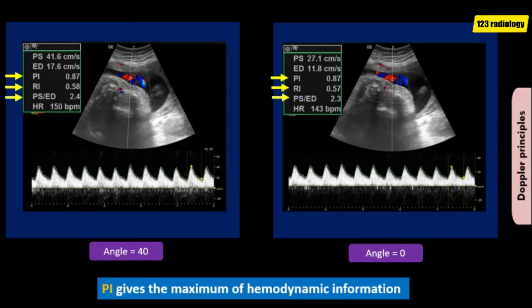Look at these two waveforms. They were obtained from the same fetus from the umbilical artery but with different angles between the ultrasound beam and the direction of blood flow. The peak systolic velocity of the right waveform is about 41 cm/s with an angle of about 40 degrees, while on the left waveform it is about 27 cm/s with an angle of 0 degrees. However, the Doppler indices — resistive index, pulsatility index, and SD ratio — are relatively the same in both, because these Doppler indices are angle-independent.